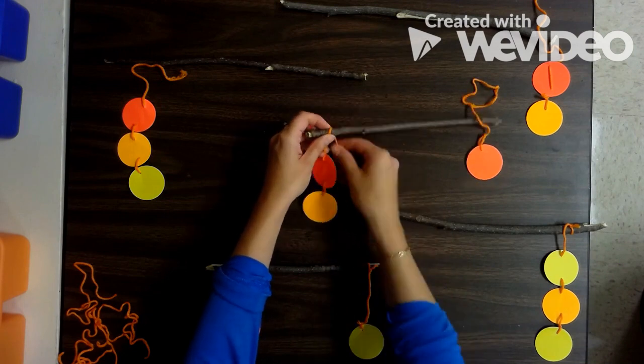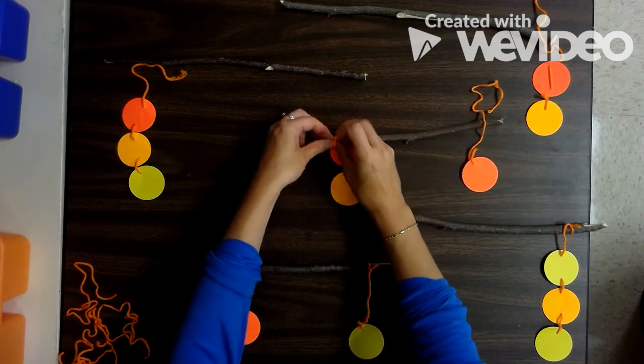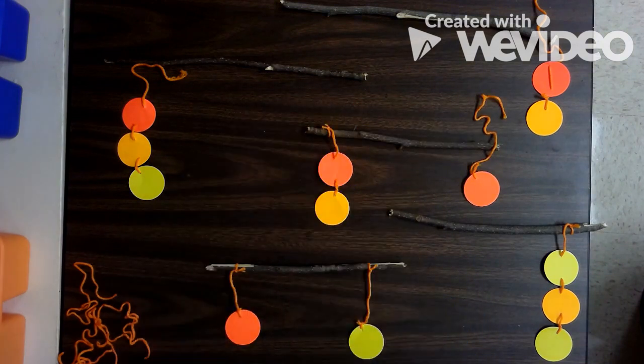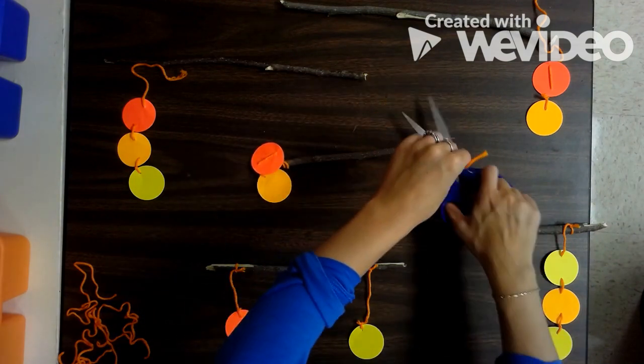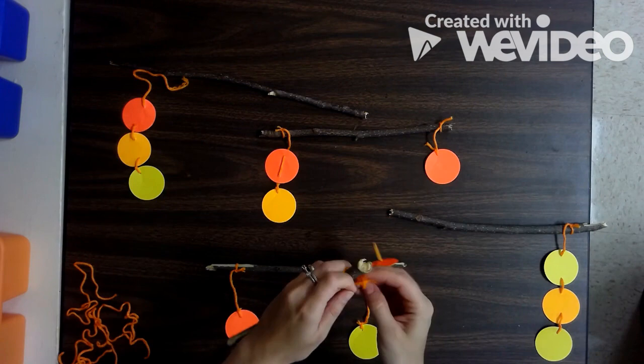At the end, when I was done, I went ahead and put a little dot of glue on each one of these to help them hold a little bit better. You could do that now or you could do that later like I did. And then also, just to keep it looking kind of clean, go ahead and trim any of that extra yarn that you have hanging off.